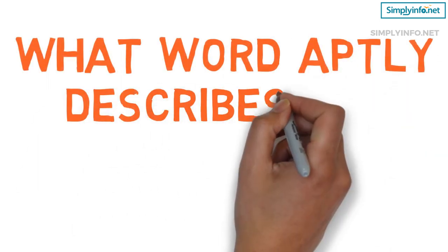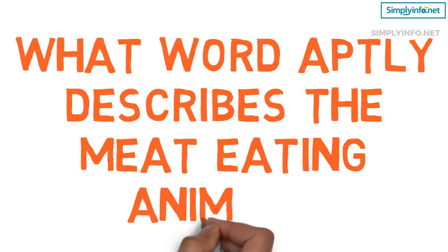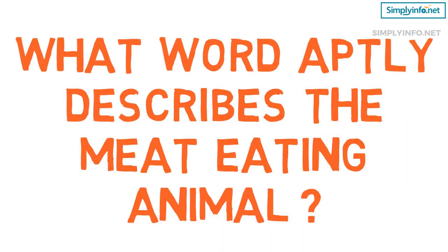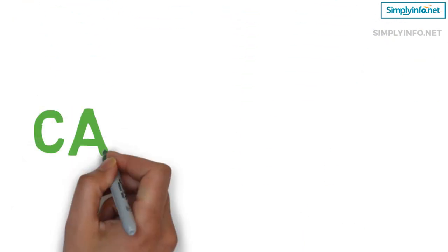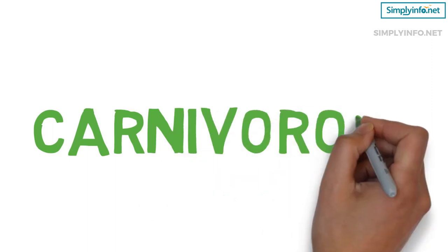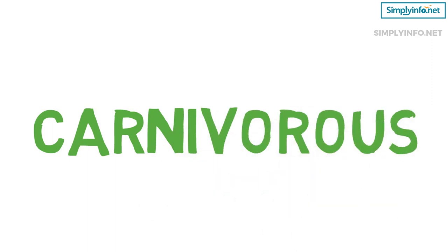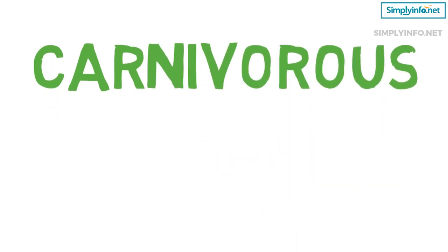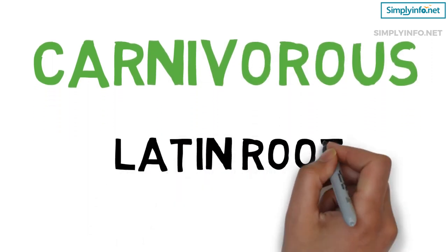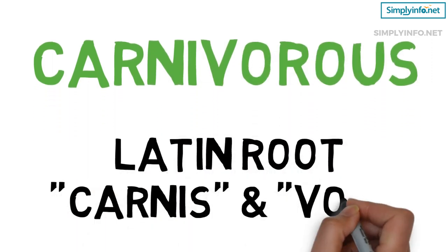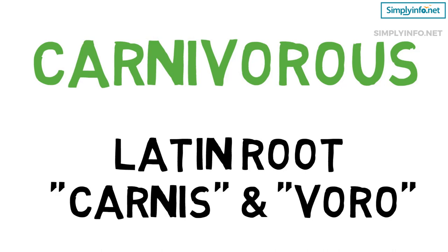What word aptly describes a meat-eating animal? Carnivorous. Carnivorous is from the Latin root 'carnis,' which means flesh, and 'voro,' which means to devour.